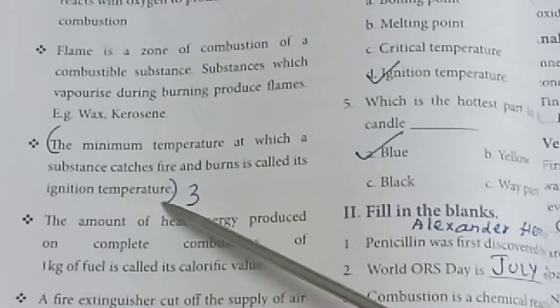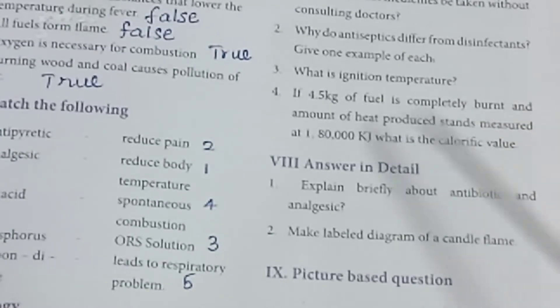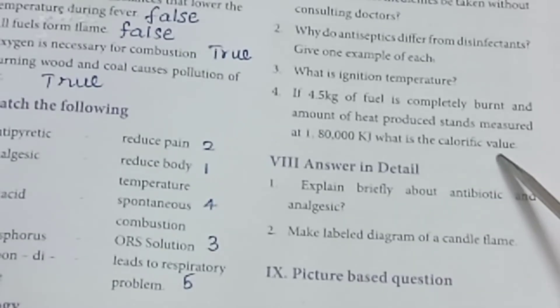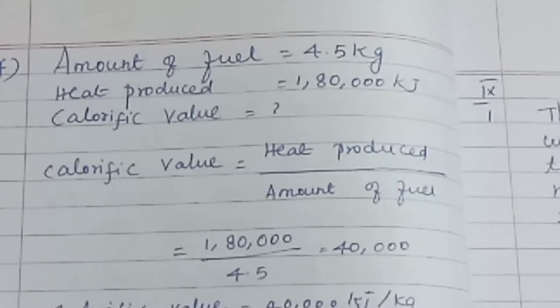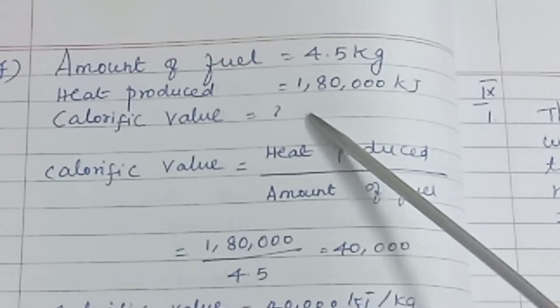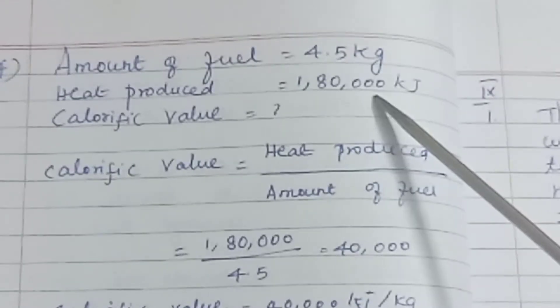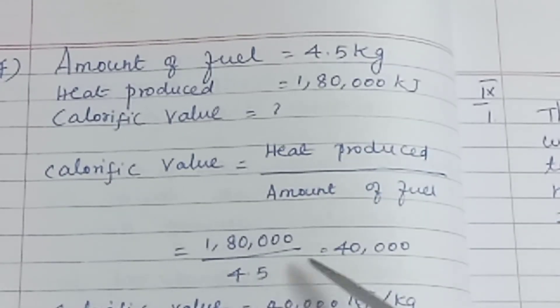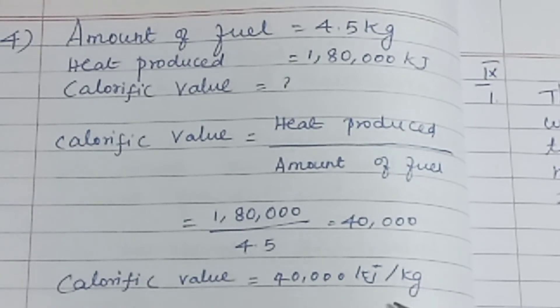Ignition temperature: the minimum temperature at which a substance catches fire is called its ignition temperature. Fourth: If 4.5 kg of fuel is completely burnt and the amount of heat produced is 180,000 kilojoules, what is the calorific value? Amount of fuel = 4.5 kg, heat produced = 180,000 kJ. Calorific value = heat produced ÷ amount of fuel = 180,000 ÷ 4.5 = 40,000 kilojoules per kilogram.